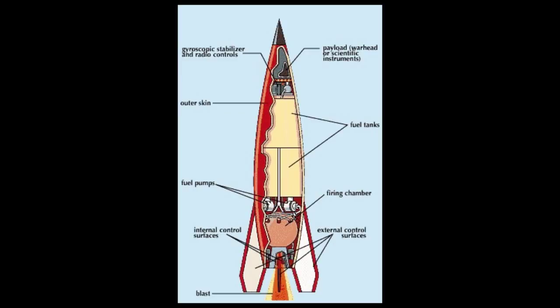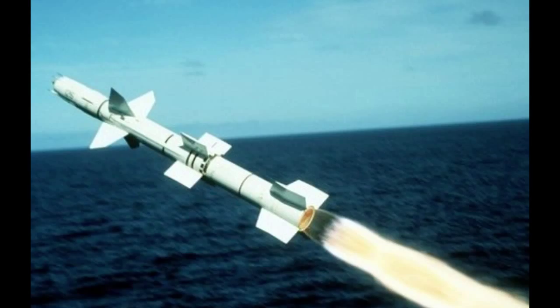In the event that the position that it is in is not the position that it wasn't, the system has acquired a variation, the variation being the difference between where the missile is and where it wasn't. If variation is considered to be a significant factor, it too may be corrected by the GEA.